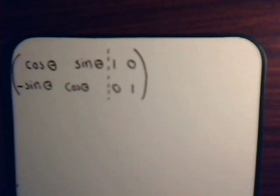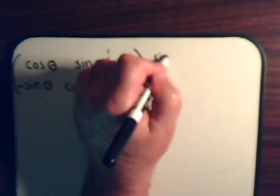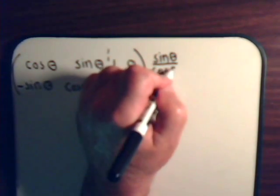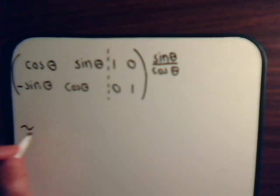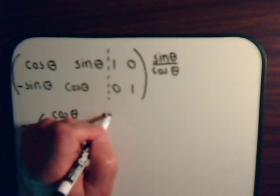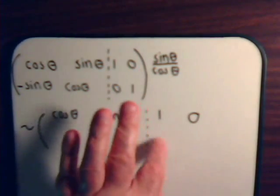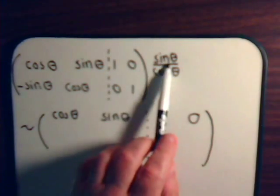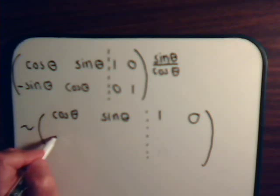The first thing we want to do is make this entry zero. So we're going to multiply the first row by sine of theta divided by the cosine of theta, and add it to this row. The first row is unchanged. Multiplying across: this will be sine theta over cosine theta times the cosine of theta — that's the sine of theta — add it to that, and that is zero.